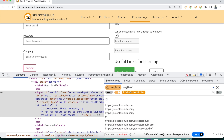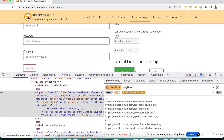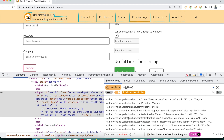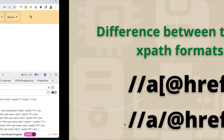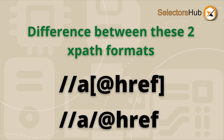However, this XPath cannot be used in an automation script for the obvious reason — it returns string values, not web elements, not the node. Whereas this XPath format with square brackets and at-rate attribute name inside can be used in automation scripts because it returns the node value, the web element. The second format — double forward slash a, forward slash, at-rate href — is very helpful for quick testing: get all links in a page, get a particular attribute value quickly without writing a full automation script.